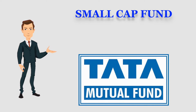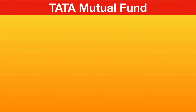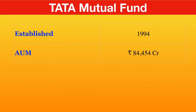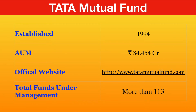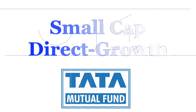At the end of the video I will show you some alternative funds that you can consider before you choose this one for your investment. First and foremost, we will see some basic information about Tata Mutual Fund AMC. This AMC got established in the year 1994. The assets under management are around 84,454 crores. The official website is www.tatamutualfund.com. There are more than 113 mutual funds being offered by this AMC, which has more than 25 years of experience in the field.